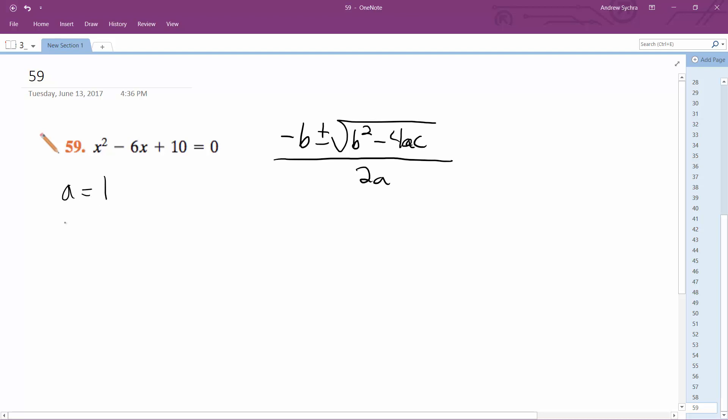So a is going to be equal to 1, b is equal to negative 6, and c is equal to 10. So here we go.